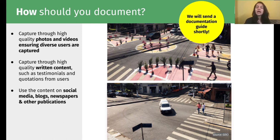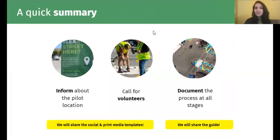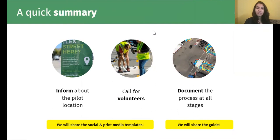All of this content can be put together and used for your social media, your blogs, newspapers, and various other publications so that you can spread the word widely. We will also be sending a documentation guide very shortly to help you further. Quick summary of the three points: first, to inform about the pilot location to the community; second, call for volunteers from along the pilot sites preferably; and third, document the process at all stages. At every point, we will be helping and guiding you by sharing social and print media templates as well as other guides to help you document the process.